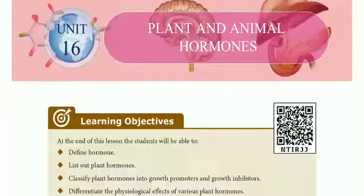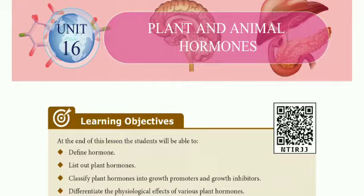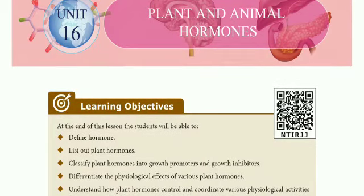Hi students, now we are going to see plant and animal hormones. In the previous class we covered some basics of hormones especially in animals. Animals show majority of changes due to hormones. With this lesson you will learn about plant and animal hormones. The first learning objective is to define hormones, and the second is to list out plant hormones — there are totally five types of plant hormones.